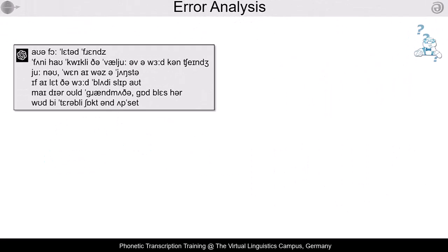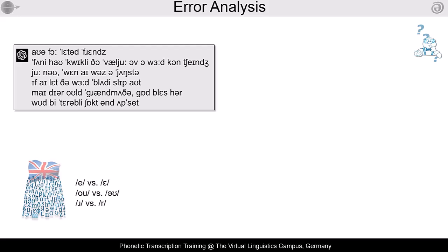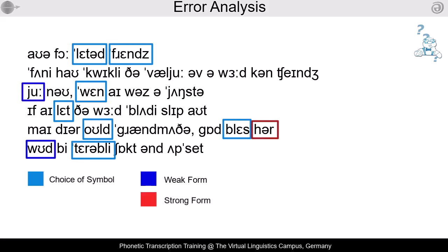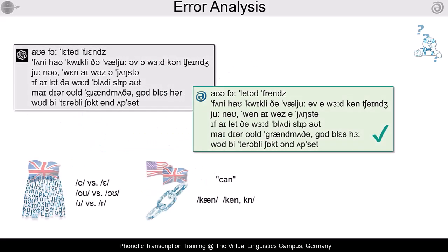The second option uses language-specific transcription passages with deliberately created problems. The following types of problems have shown to be very useful for this training purpose: the inconsistent use of phonetic symbols, and the effects of connected speech. The learner's task is simple: identify and correct the problems. A comparison with AI-generated solutions is of little help here, since their results are themselves error-prone.